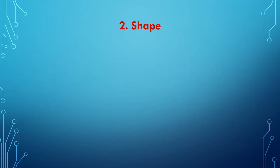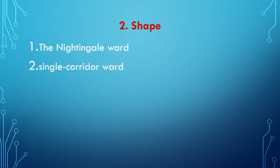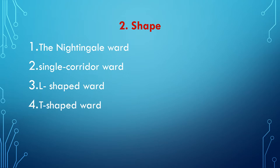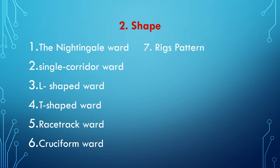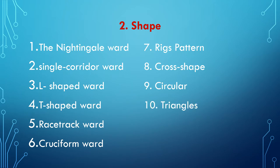The second factor in categorizing a nursing unit is its shape. According to shape, there are 12 types of wards: Nightingale ward, single corridor ward, L-shaped ward, T-shaped ward, racetrack ward, cruciform unit, Rex pattern, cross-shape unit, circular unit, triangle unit, cluster unit, and radial unit or ward.